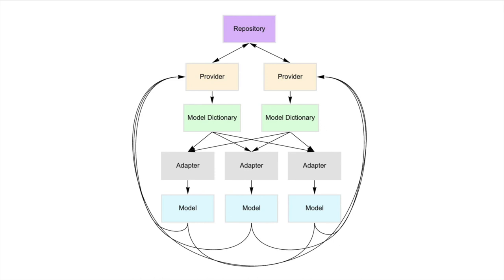Often you don't have just one provider — you want a memory cache, local storage, or SQLite on the client side, plus a remote source like REST, GraphQL, or Firebase. With two providers such as Firebase and SQLite, they each query their own model dictionaries and adapters to generate models. Adapters are often shared in a single domain — for example, offline first with REST has every adapter extend an offline first with REST adapter — ensuring you always generate the same user model, not a separate user SQLite and user Firebase model. Those models are returned to providers, then to the repository to satisfy the request.